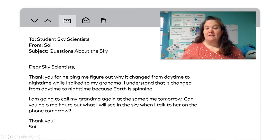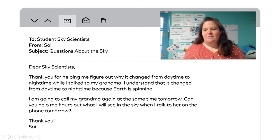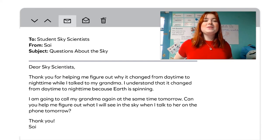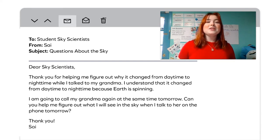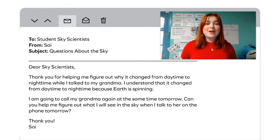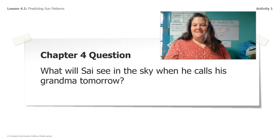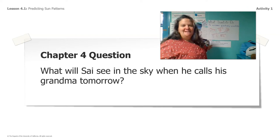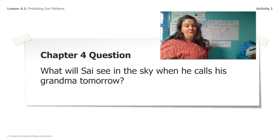So if you remember the last time we were together, we wrote Cy a letter about the Earth spinning, and Cy actually wrote back to us. My daughter Rosemary is going to read the letter. To student sky scientists, from Cy. Subject: questions about the sky. Dear sky scientists, thank you for helping me figure out why it changed from daytime to nighttime while I talked to my grandma. I understand it changed because Earth is spinning. I'm going to call my grandma again at the same time tomorrow. Can you help me figure out what I will see in the sky when I talk to her? Thank you, Cy. Cy gave us our Chapter 4 question: what will Cy see in the sky when he calls his grandma tomorrow? Let's figure that out.